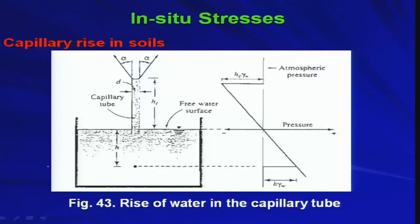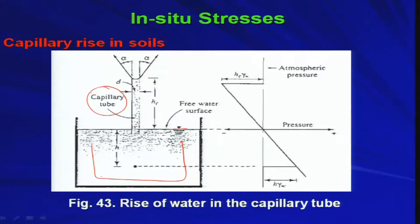If you idealize this: in a tank filled with water, the free water surface is the phreatic surface. This tank can be idealized as a soil deposit under the water table — a submerged soil deposit. The continuous void spaces act as capillary tubes, and water will rise in the upper zone due to these capillary tubes. The height of capillary rise needs to be calculated to find out how much depth will be saturated, because if you do not consider this, you may think a structure placed above is under dry conditions — but it may not be, due to capillary rise.